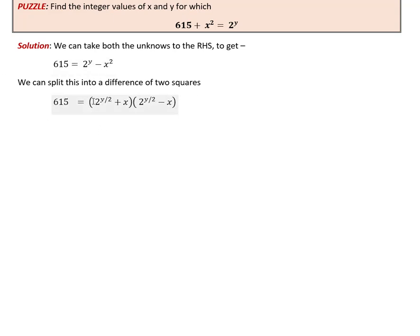So that gives us these two factors: 2 raised to y/2 plus x and 2 raised to y/2 minus x. Of course we can express the first factor as a and second factor as b. Then if we add a plus b, the plus x and minus x will get cancelled and we'll get twice of 2 raised to y/2, which will make it 2 raised to y/2 plus 1.